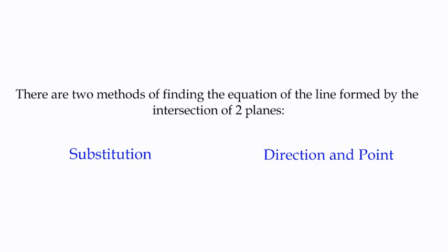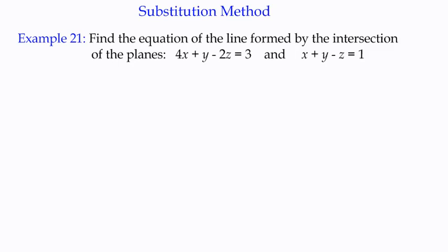The first one is substitution. So we're going to have a look first of all at how we find the equation of the line formed by the intersection of two planes using substitution. By definition, all we're going to do are substitution methods. Here we go. Find the equation of the line formed by the intersection of these two planes. So we've determined that this is going to be an intersection, and that intersection is going to be a line.